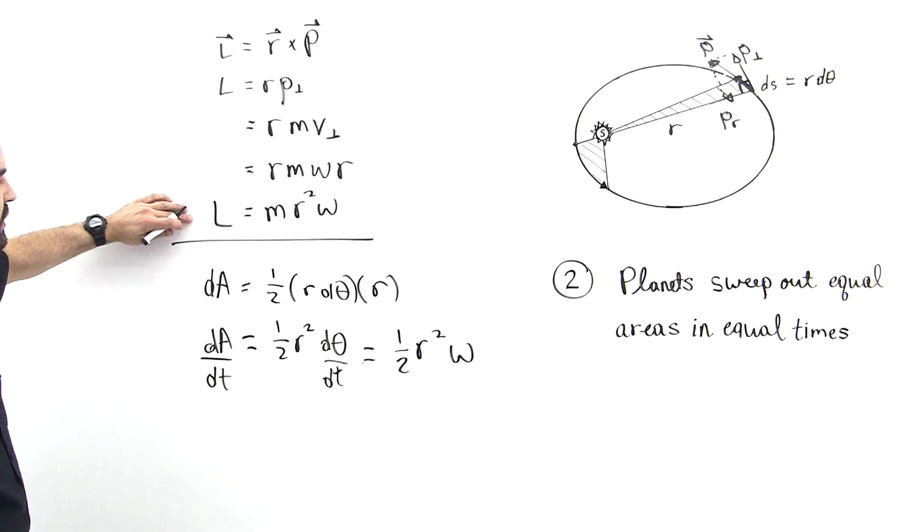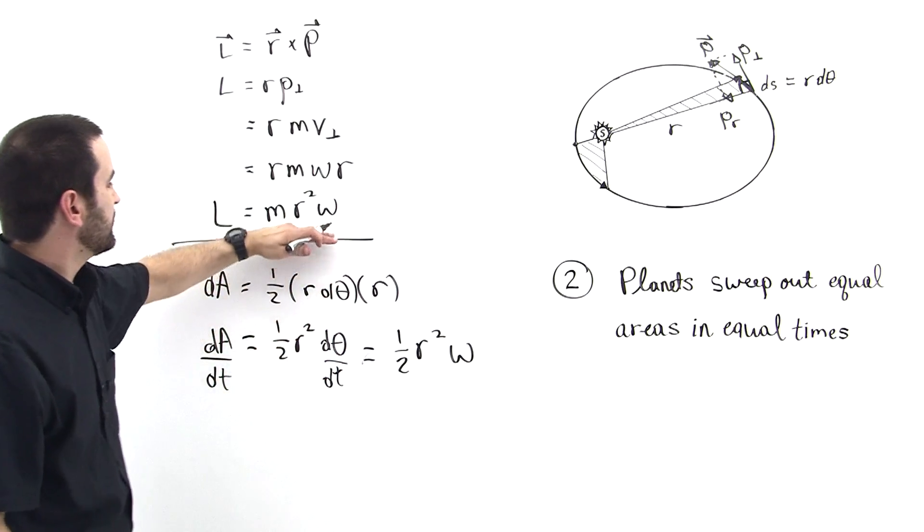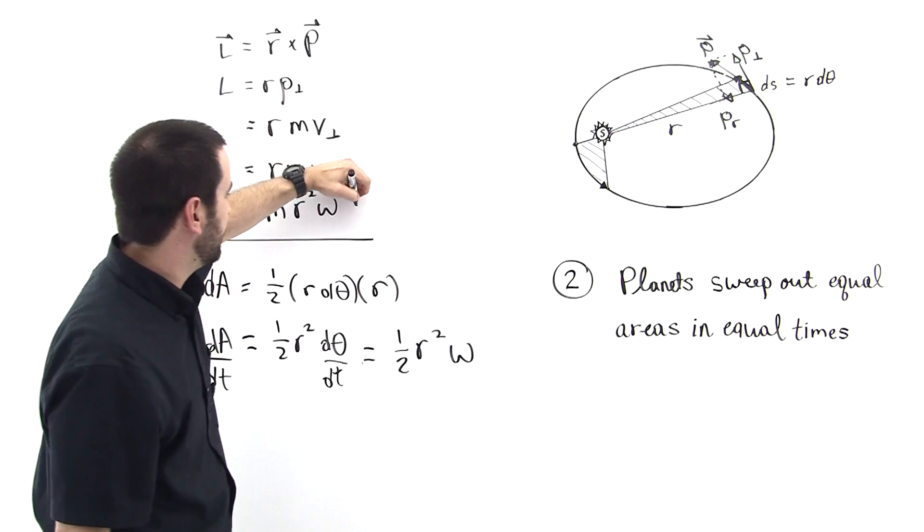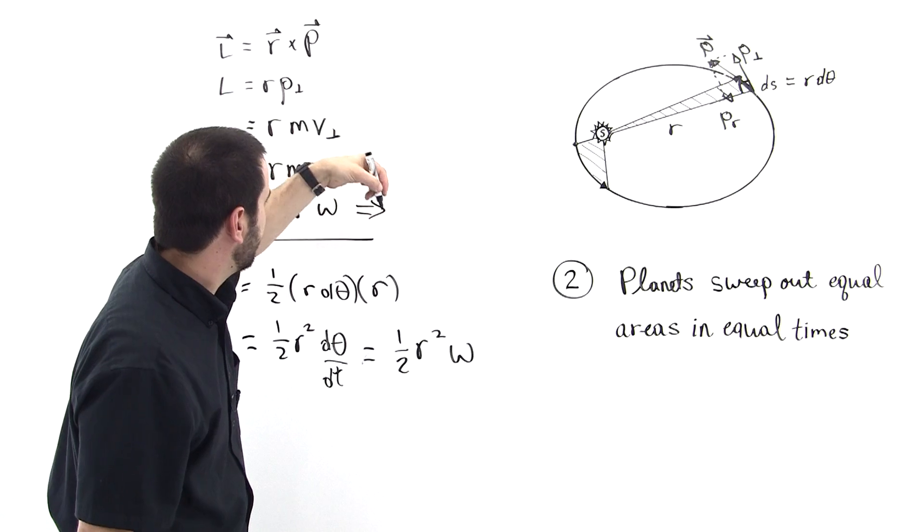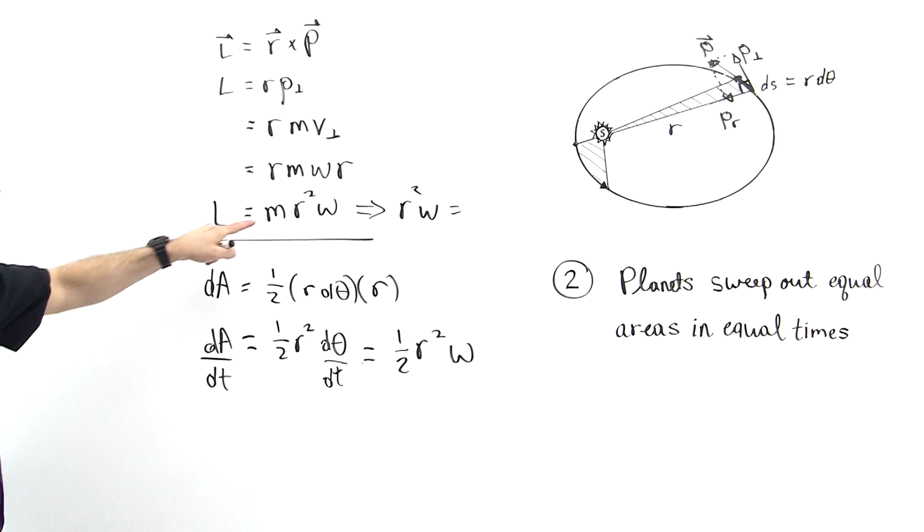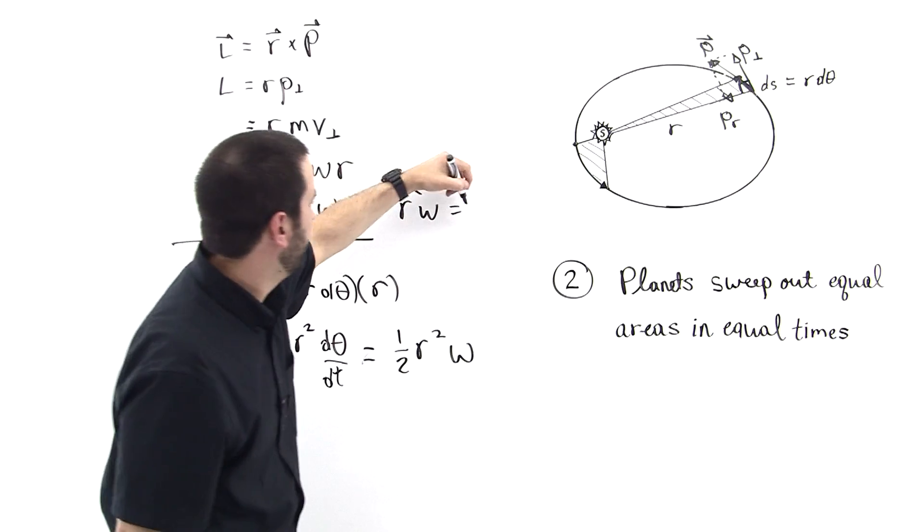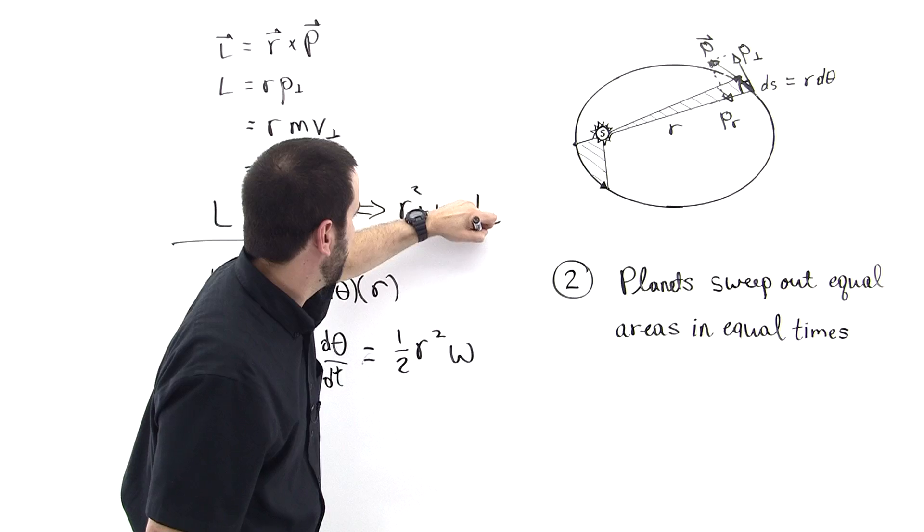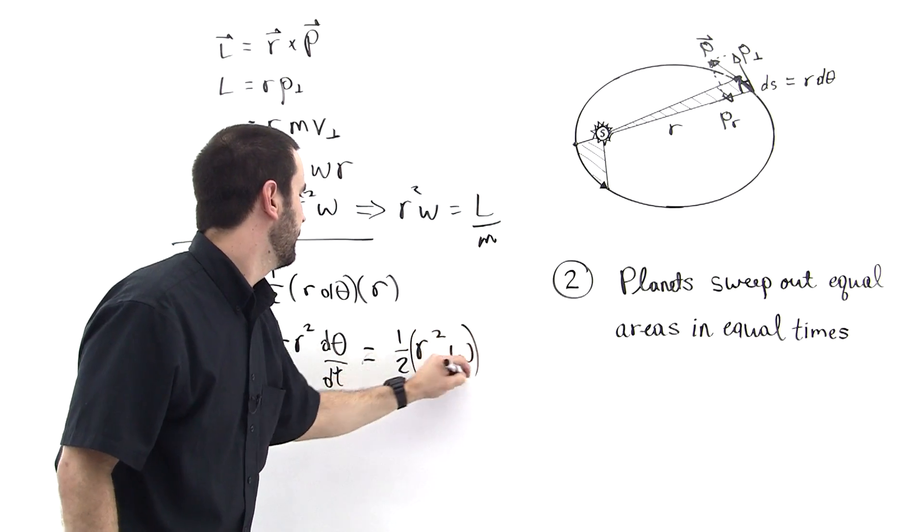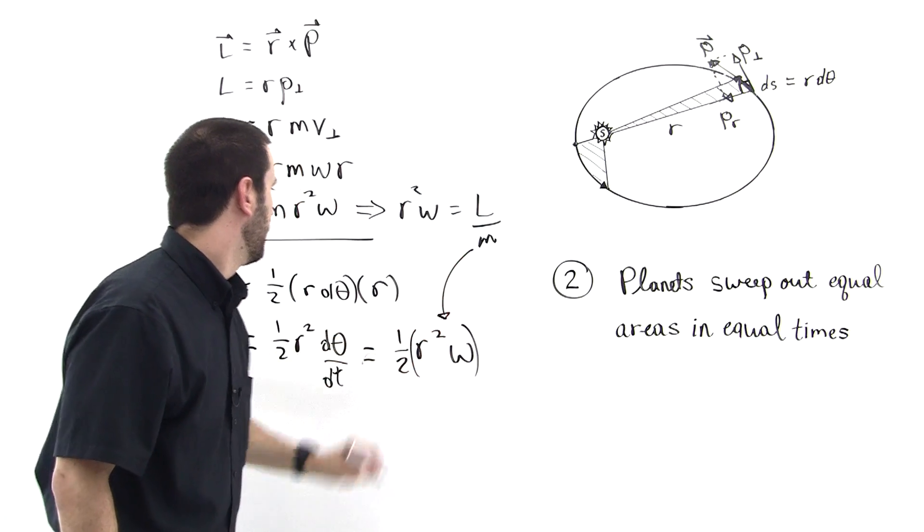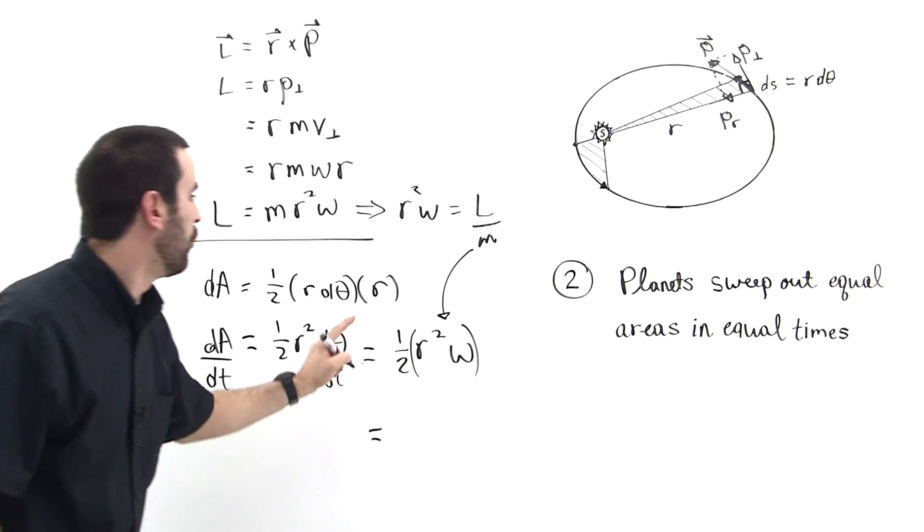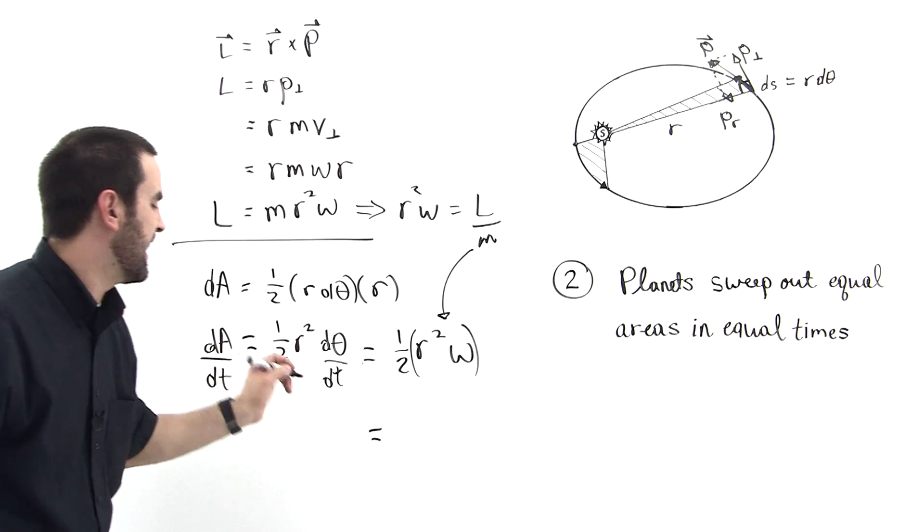Now, from this equation, we can eliminate r squared omega between both of these two, and it will yield a powerful result. So from this equation, we can say that r squared omega is equal to, look, we just divide by m, so it's L over m. And so we'll make that substitution in for this thing. So then this is equal to one-half times L over m is L over 2m.